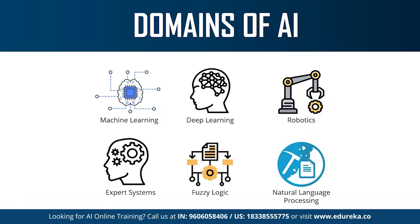Then we have expert systems. An expert system is an AI-based computer system that learns and reciprocates the decision-making ability of a human expert. Expert systems use if-then logic notions to solve complex problems and do not rely on conventional procedural programming. They are mainly used in information management, fraud detection, virus detection, and managing medical and hospital records. Those were the different branches of artificial intelligence.